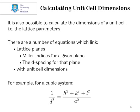Once we know the positions of these, it is also easy for us to calculate the dimensions of the unit cell, that is, the lattice parameters. There are a whole number of equations that link the lattice planes, i.e. the Miller indices for a given plane and the d-spacing for that plane, with the unit cell dimensions.